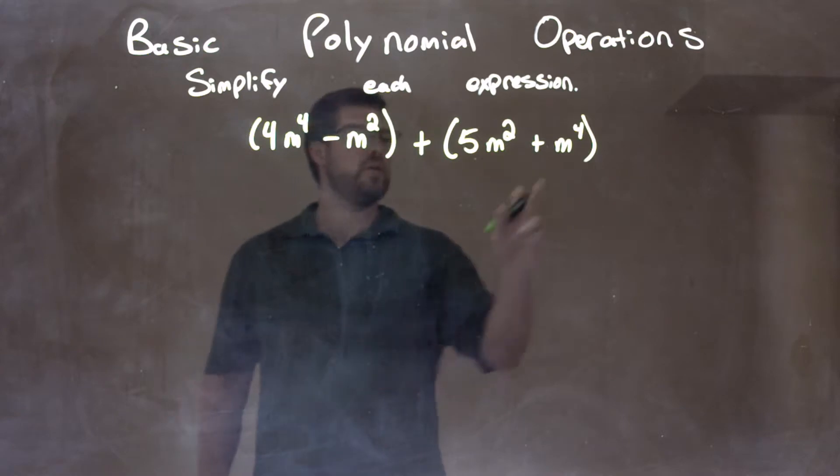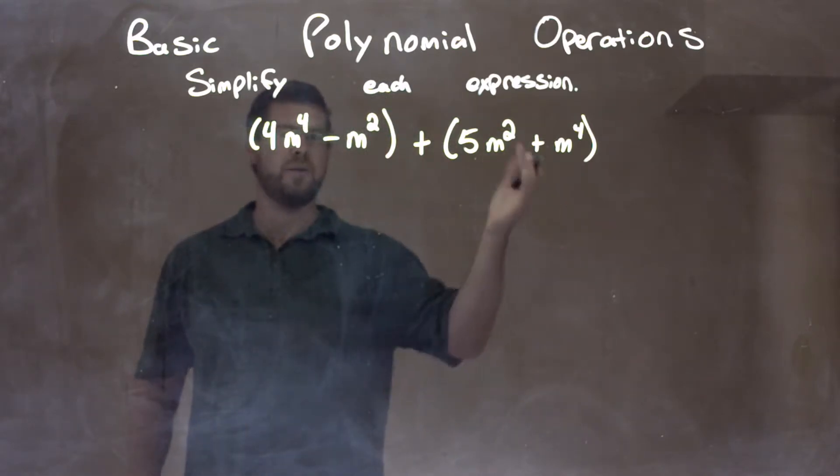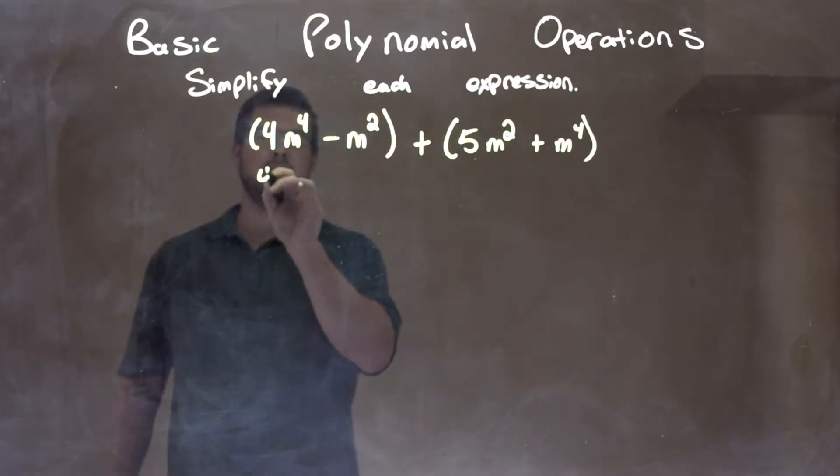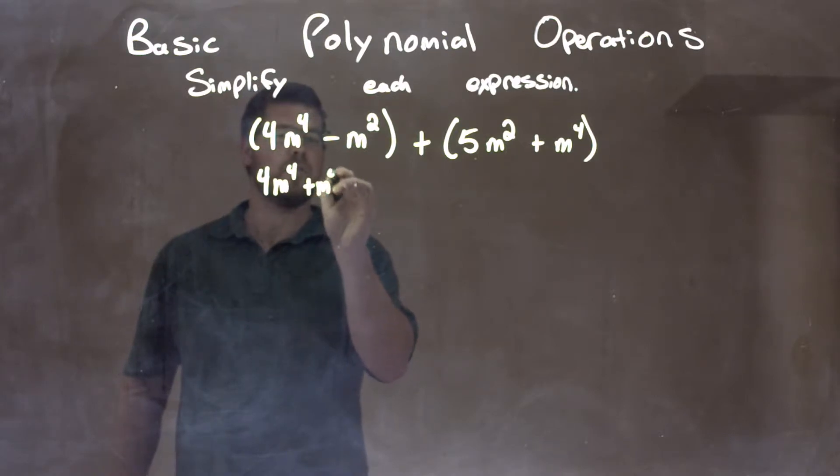Well, we have 4m to the 4th and m to the 4th. So we have plus 4m to the 4th and plus m to the 4th. We can rearrange this. If you want to see it like this, 4m to the 4th plus m to the 4th.